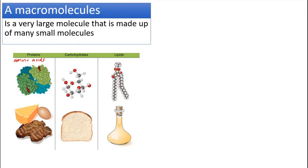For carbohydrates, the basic unit is also known as simple sugar — it can be glucose, galactose, or fructose. Lipids are also an example of macromolecules. The simplest units of lipids are fatty acids and glycerol.